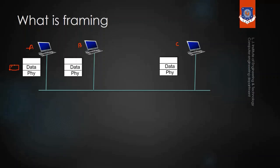When that frame is passed to the physical layer, it will be converted into bits. For example, when this frame is converted into bits, there are total 5 bits. Those bits will travel from device A to device C. Device C will receive those bits and convert them into a frame, so the frame is delivered.